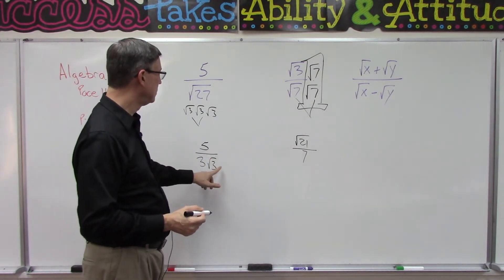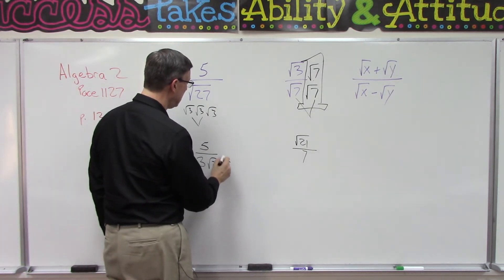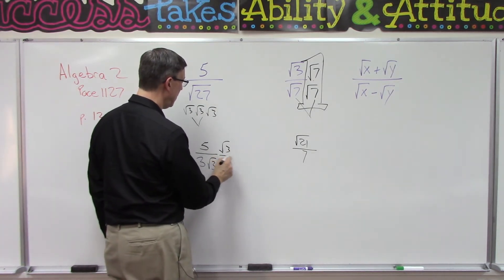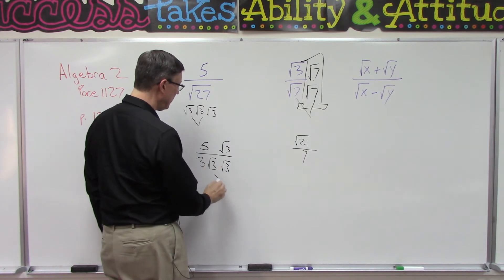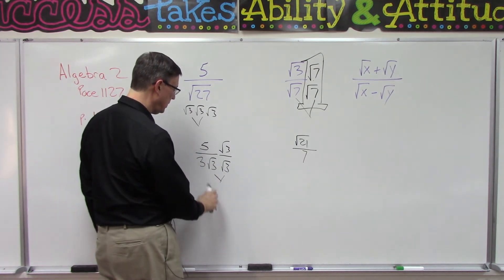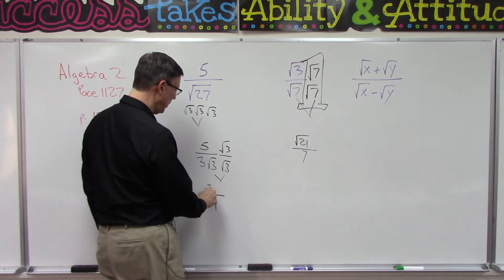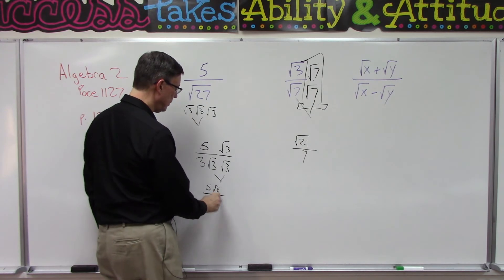Now we have to rationalize it by multiplying top and bottom by just the square root of three—not the whole thing, just the radical part. So I'm going to do the square root of three down here, square root of three up here, and then that makes that pop out, which gives me nine in the denominator (three times three). The numerator just becomes five square root of three, and we're done.